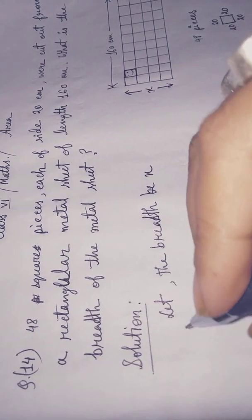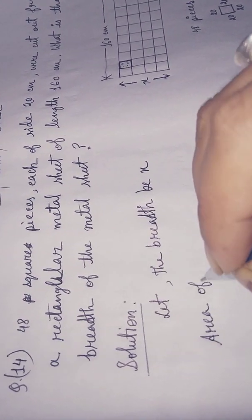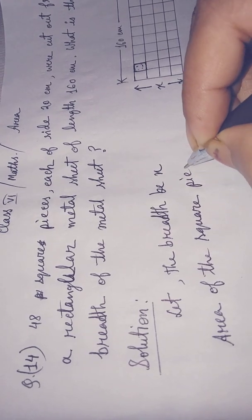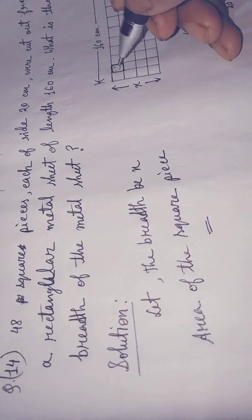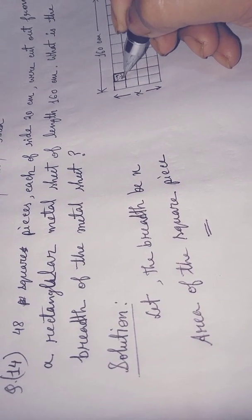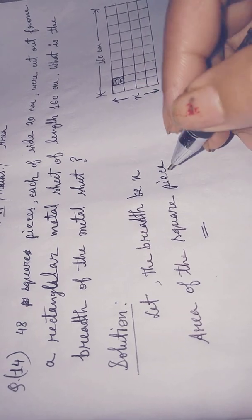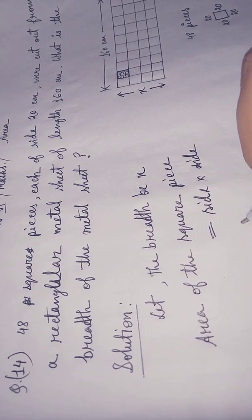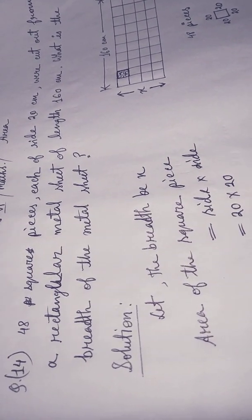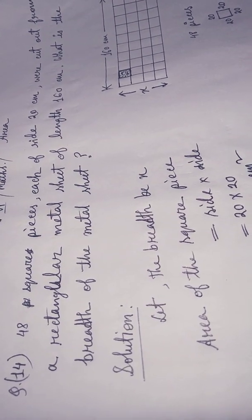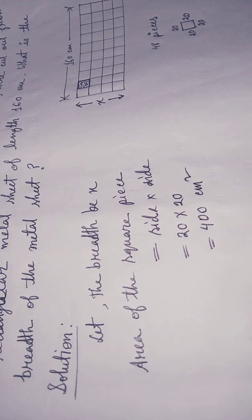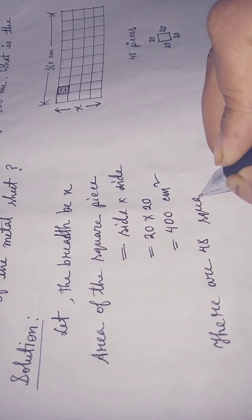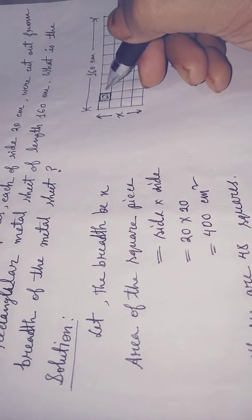Area of the square piece: side into side. Side is 20 into 20 equals 400 cm square. There are 48 squares.